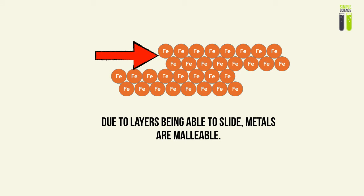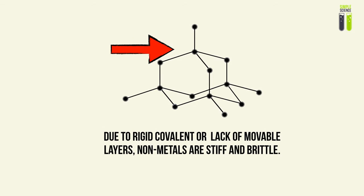Metals have a layered structure in their metallic bonding that allows the layers to slide, with free electrons acting as a glue to hold it together. Non-metals, on the other hand, either have rigid covalent bonds or lack the movable layers found in metals. So therefore, non-metals are stiff and brittle — if you were to try to break apart a piece of coal, it would seem very brittle.